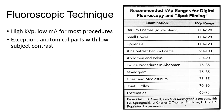For most procedures, high KVP and low MA are appropriate, with one exception. When anatomic structures have low subject contrast, high KVP is more uniformly penetrating. If you recall from your exposure principles course, we need that differential absorption — only possible with a lower KVP setting — in order to promote higher image contrast when the subject contrast is low.